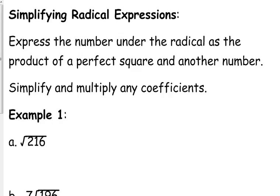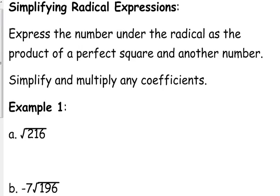We're going to talk about simplifying radical expressions. If you haven't gotten it when we've been talking about it before in this class, you should definitely get it after today. The key is you need to express the number under the radical as the product of a perfect square, when you're talking about square roots, and another number. Then you want to simplify and multiply any coefficients if there are coefficients.